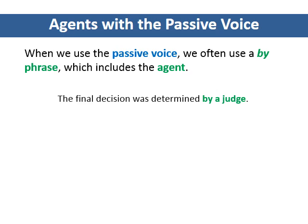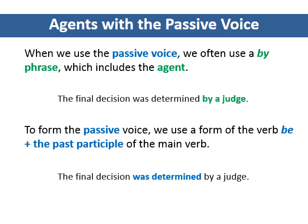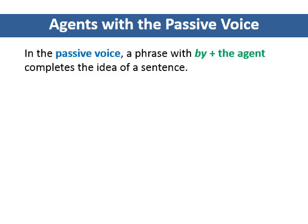A by-phrase is simply a phrase that begins with the preposition by. To form the passive voice, we use the verb be plus the past participle of the main verb. In this sentence, the writer uses the past of be and the past participle of the verb determine. Note that for regular verbs, the past participle ends in -ed. In the passive voice, a phrase with by plus the agent completes the idea of a sentence.